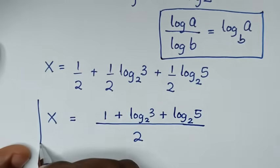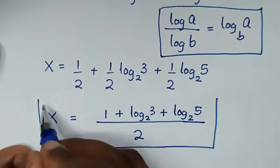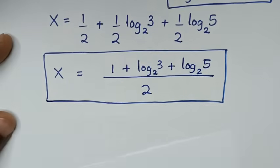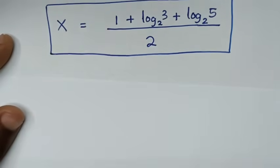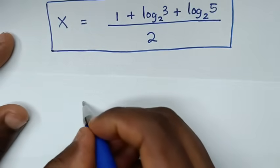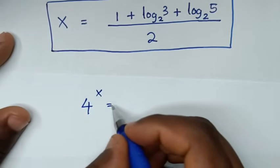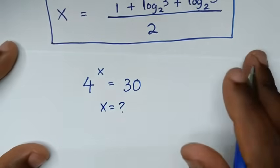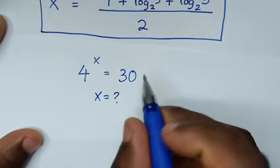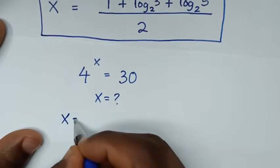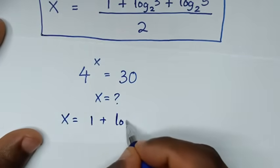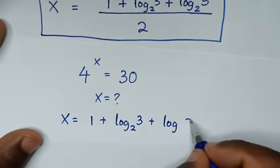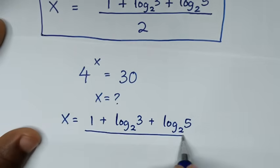Then x is equal to 1 plus log base 2 of 3 plus log base 2 of 5, all over 2. This is the final answer for the value of x. Now in the next step let's check this answer to confirm it is correct, going back to our original problem 4 power x is equal to 30, where x is equal to (1 + log₂3 + log₂5) / 2.